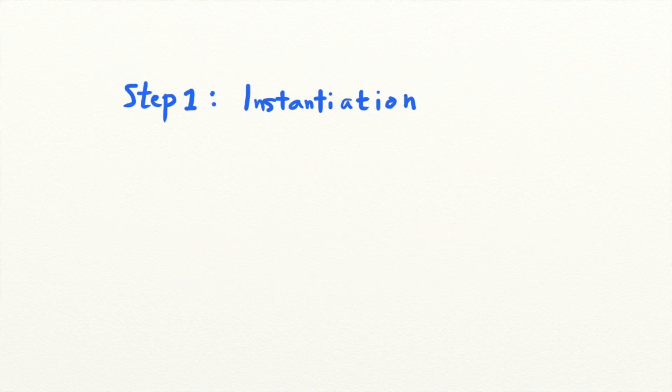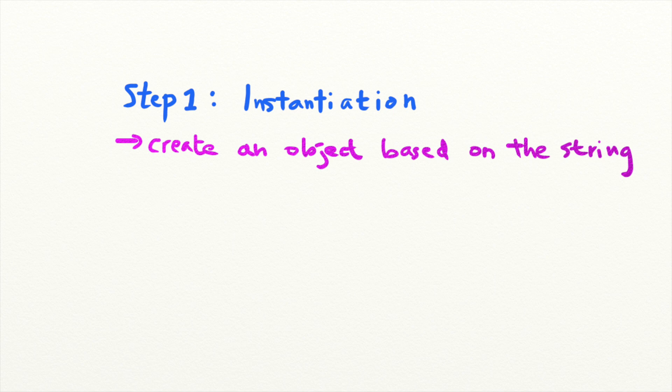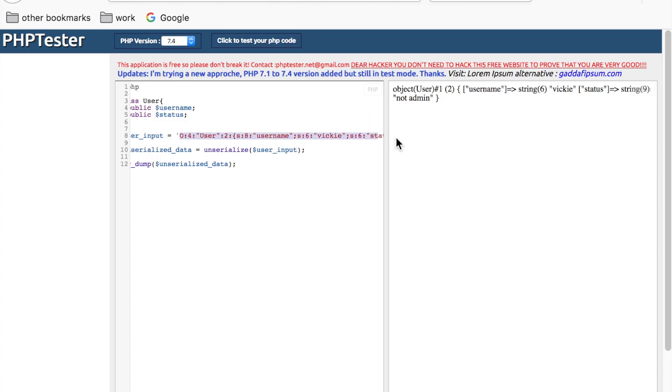Step one of deserializing a PHP object is instantiation. Instantiation is when the program creates an instance of a class in memory. And that's what unserialize does. It takes the serialized string which specifies the class and the properties of that object. With that data, unserialize creates a copy of the originally serialized object.